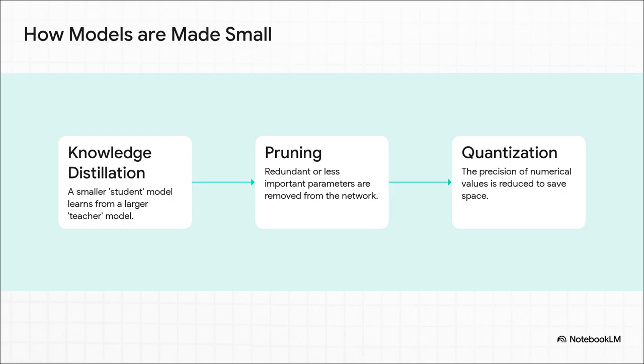Then you've got pruning. This is literally like trimming a bush. You just snip away the connections in the AI's network that aren't that important. And finally, there's quantization, which is a clever way of reducing the math precision to save a ton of space without losing too much performance.